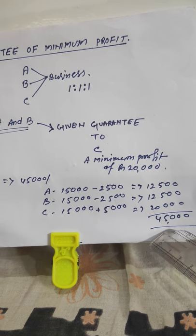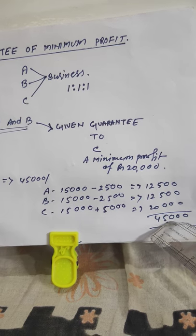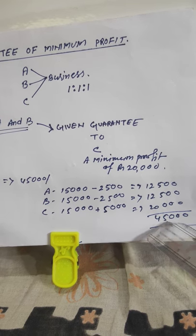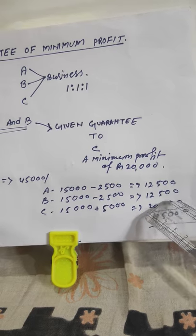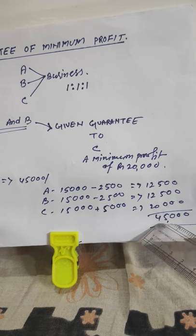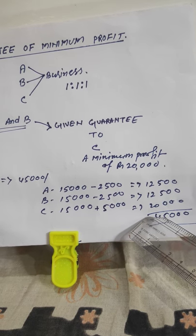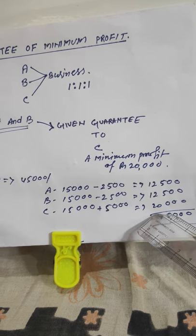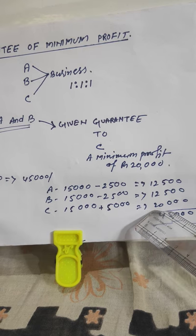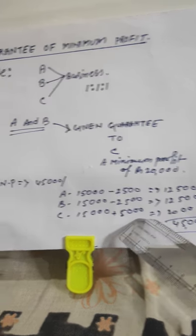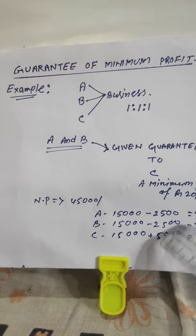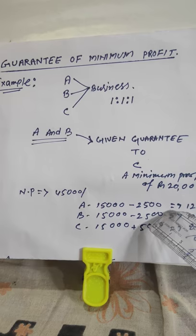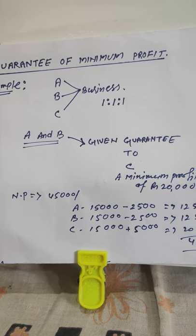So A's final share: A got Rs. 15,000 minus Rs. 2,500 given to C = Rs. 12,500. Similarly, B got Rs. 15,000 minus Rs. 2,500 = Rs. 12,500. C's final share is Rs. 15,000 + Rs. 5,000 = Rs. 20,000. Total Rs. 45,000 is distributed. C's minimum share was Rs. 20,000 and C has received Rs. 20,000. With this concept of guarantee of minimum profit, let's come to a question from your exercise.